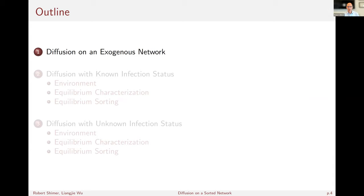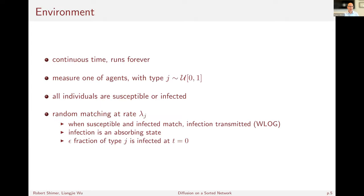So here's an outline of the talk. First, we'll explain the link between sorting patterns on a network and the speed of diffusion. To do that, we'll develop a very simple model with no economic decisions — an exogenous network where we can vary the sorting pattern and look at the speed of diffusion. We'll show how you can think about the reproduction number on that network as a function of standard objects and also an index of homophily. Then we'll move to two models in which we endogenize the network structure to see how sorting arises in equilibrium.